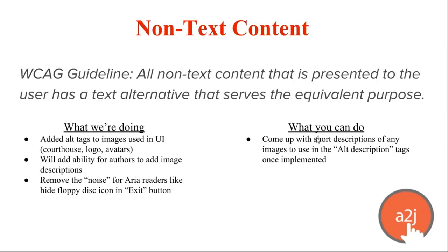The first guideline our auditors looked at is non-text content — the idea that a graphic, video, or anything non-text is presented to the user with a text alternative that serves the equivalent purpose. So if you have an image, you have a description of that image. What we've already done is added alt tags — alternative tags — to images in the code used in our user interface: the courthouse, our logo, the avatars, to explain what these images are for screen readers. We'll also add the ability for authors to add image descriptions themselves when they upload an image.